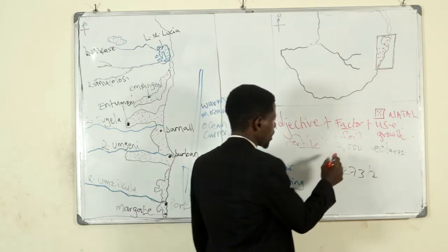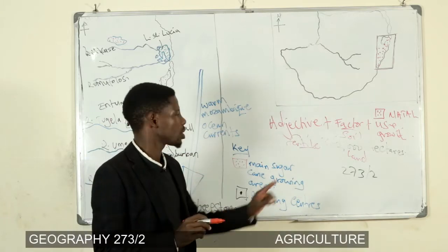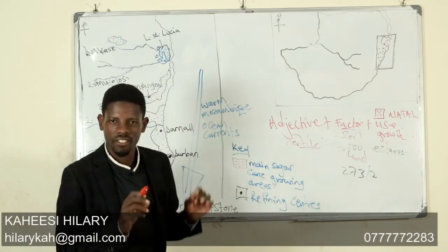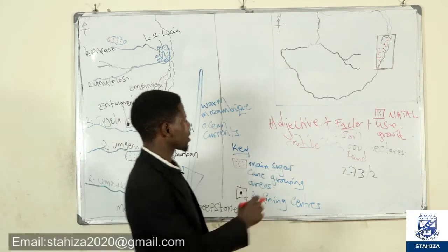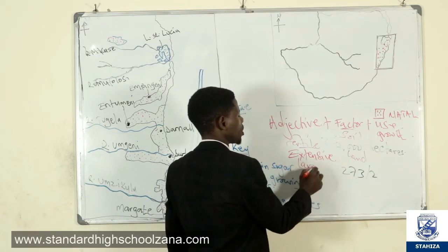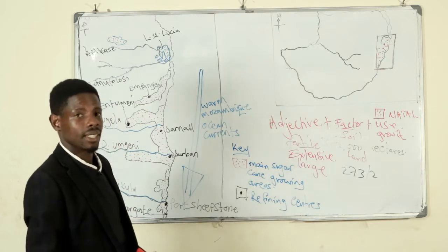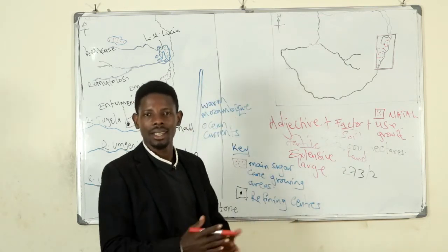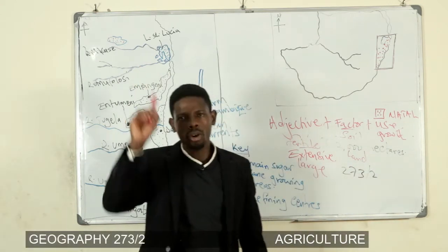Another physical factor is land. Which adjective can we attach to land? We can say extensive — a large land of about 362,000 hectares, where large-scale growing of sugarcane takes place in Natal province. We have put an adjective, the factor, and the use. That is how you are going to get a distinction in geography.